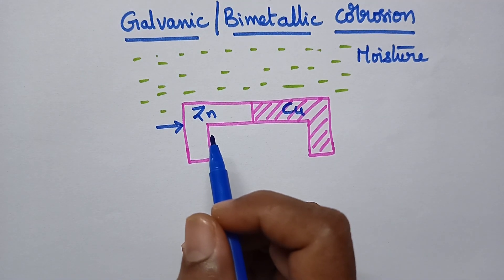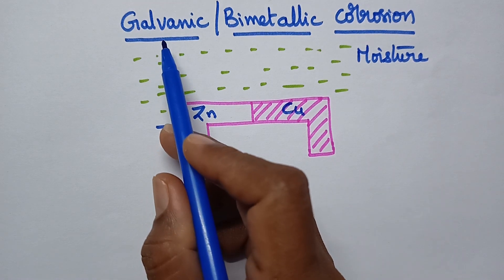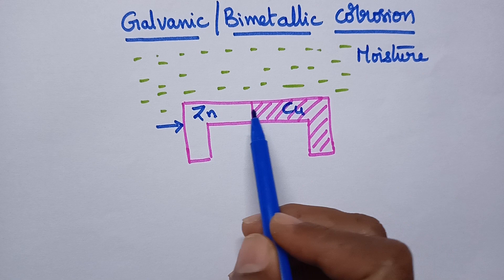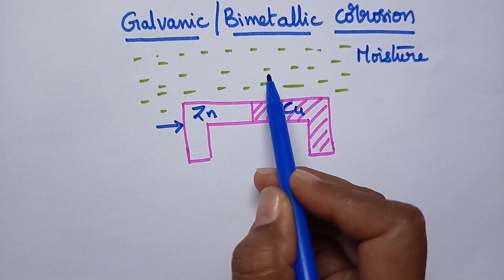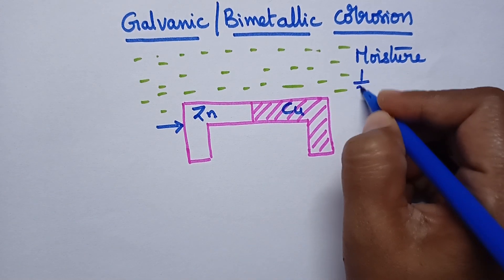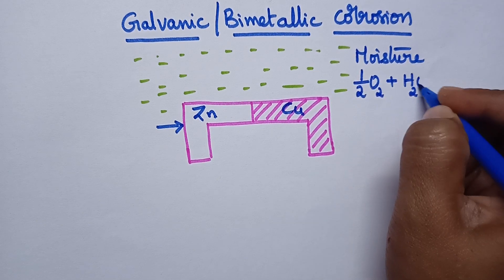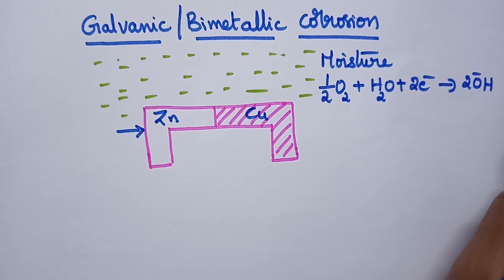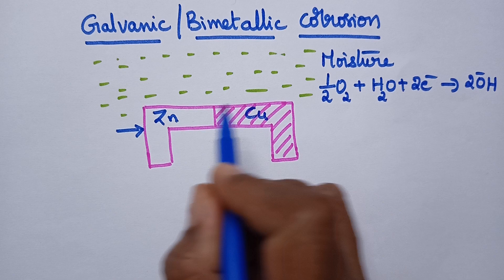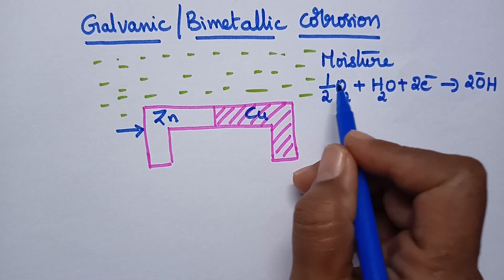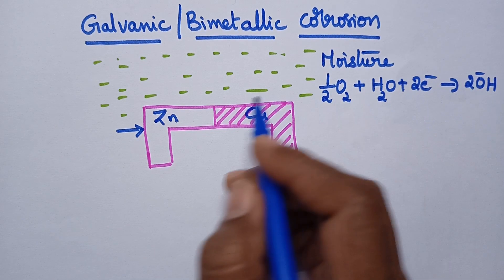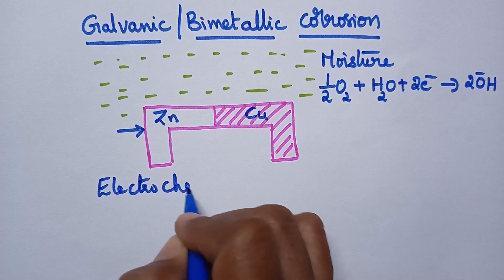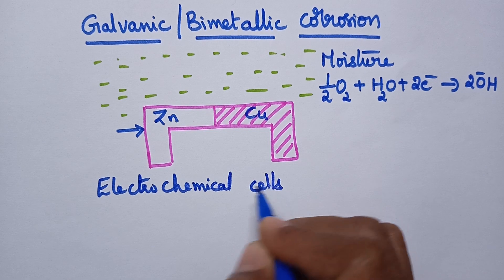Welcome back to my channel. In this video I am going to discuss in detail about galvanic corrosion, which is also known as bimetallic corrosion. Whenever two or more different metals are connected to each other and jointly exposed to a moist environment — meaning moisture and oxygen are present — there is a probability for the formation of an electrolyte. This results in the formation of several electrochemical cells, creating anodic and cathodic areas, and thus the metal undergoes galvanic corrosion.